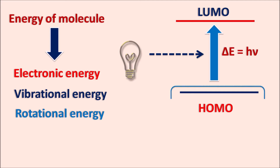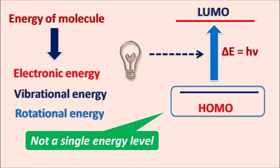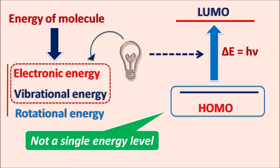The energy level represented by HOMO is not a single energy level — the energy of the molecule is associated with electronic, vibrational, and rotational energy. When energy is supplied, all three types of energy levels change. In UV-visible spectroscopy, energy is mainly utilized for electronic and vibrational transitions; in IR spectroscopy, less energetic radiation mainly produces vibrational transitions.